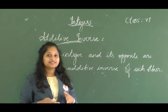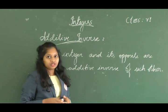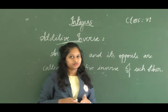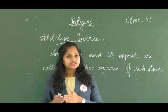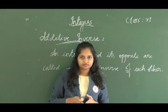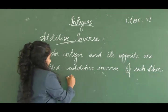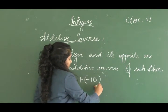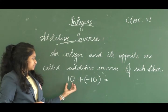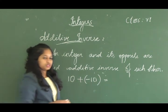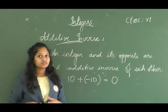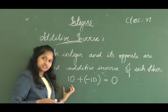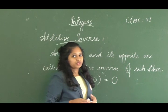An integer and its opposite are called additive inverses of each other. The additive inverse of 10 is minus 10. So what is 10 plus minus 10? Adding a positive 10 and a negative 10 gives 0.